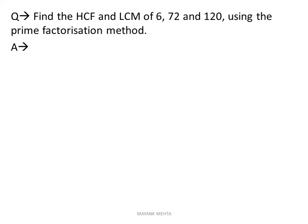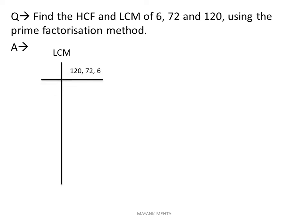अब इसी की help से: find the HCF and LCM of 6, 72 and 120 using the prime factorization method। आपको तीन numbers दिये हैं — उनसे prime factorization method से HCF and LCM ढूंढना है। LCM ढूंढने के लिए तीनों numbers को एक साथ लिखो: 120, 72 and 6.